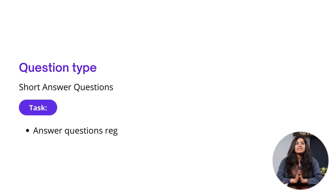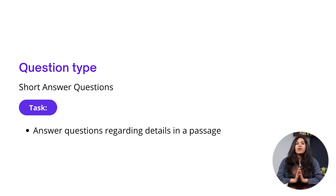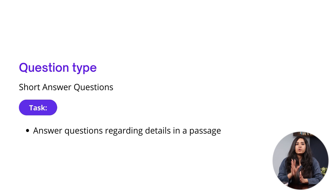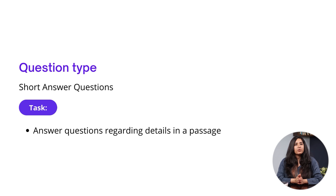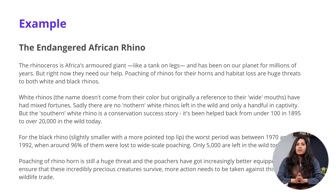The task for this question type is to answer questions regarding details in a passage. This question type is quite similar to sentence completion questions. Again, you're supposed to answer questions with words taken directly from the text. You are also given a word limit. For short answer questions, you may have either to complete sentences or answer questions. Let's look at an example, shall we?